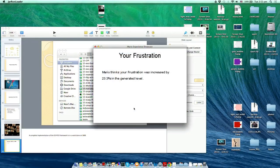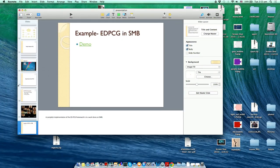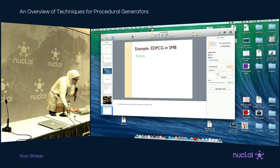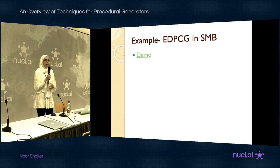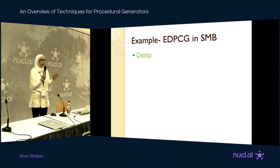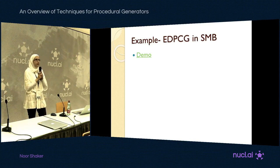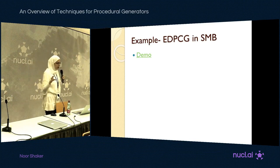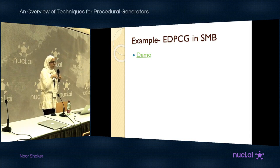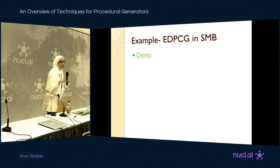In this case we used player behavior models extracted from player behavior to predict how the original level felt — how frustrating, challenging, and so on — and then explored the content space for a new level to find one that maximizes frustration according to the player's specific playing style, based on predefined content features that we built to characterize the experience.